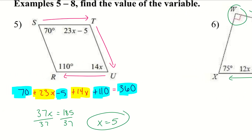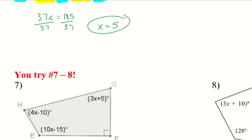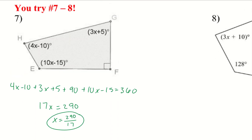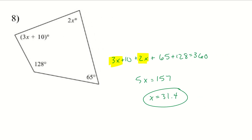Go ahead and try 7 and 8 — pause the video. For number 7, combining like terms: 4x, 3x, and 10x give 17x, and then negative 10 plus 5 plus 90 minus 15 with inverse operations from 360. Since 290 divided by 17 isn't a whole number, I left it as a fraction. For number 8, we have 3x and 2x, plus 10, plus 65, plus 125 taken from 360, giving 5x equals 157 — a decimal answer.